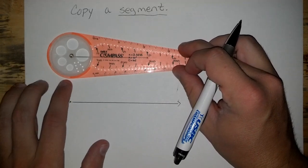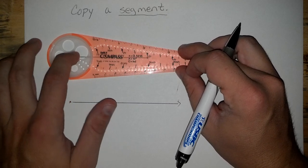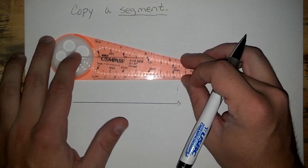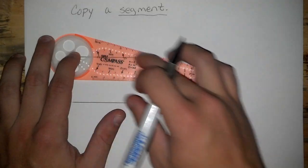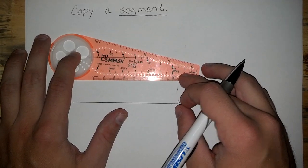Go ahead and line up your little brass ring there in your safety compass with one of your endpoints. One of your other holes along your compass, along here or on the bottom, one of them should line up with the other end of your line.